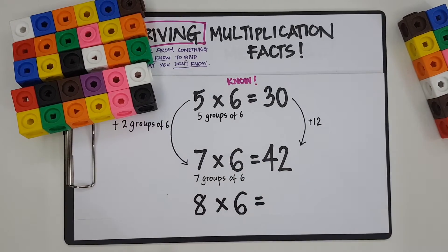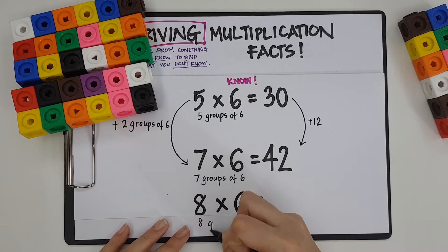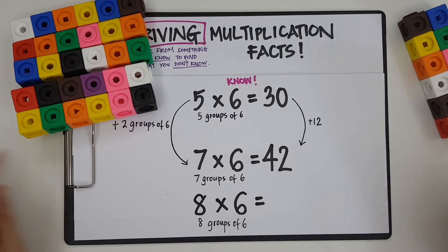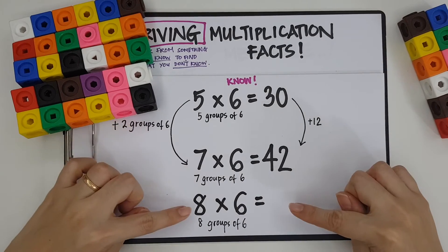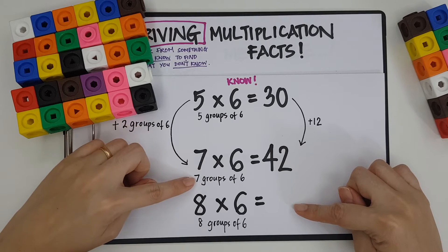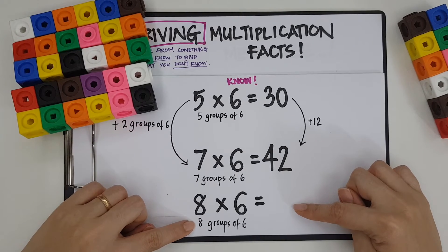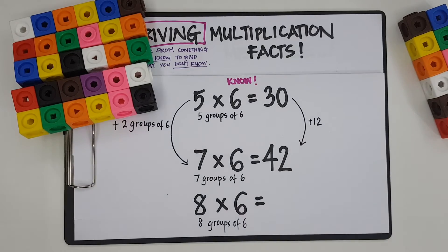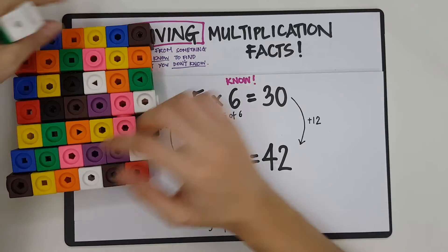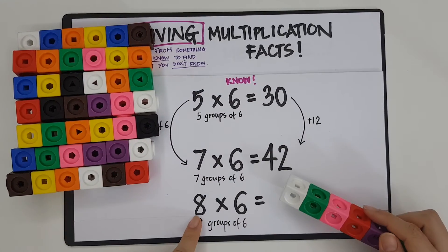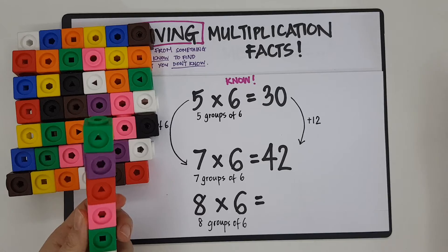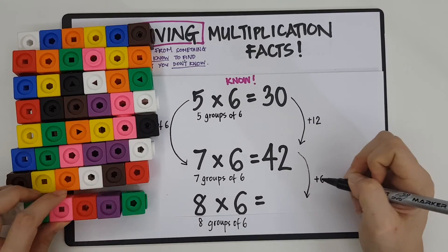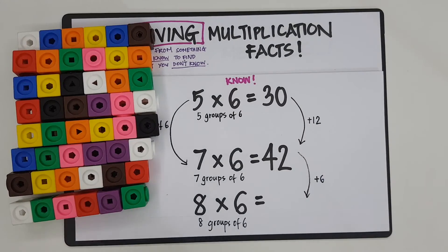Yes? If I read 8 times 6 as 8 groups of 6, right? How do I move from this to this? 7 groups of 6, 8 groups of 6. I basically have to add in another group of 6. Now if I know that 7 groups is 42, 8 groups would be adding one more group. So I'm just going to add another group of 6. Yes? 42 plus 6 is just 48.